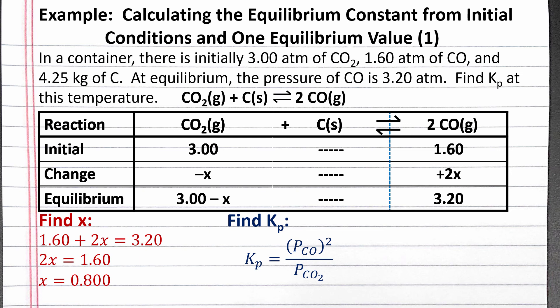Plugging in the values from our equilibrium row, we get 3.20 atmospheres squared divided by 3.00 minus 0.800 atmospheres. This equals 4.65, which is our value of Kp.